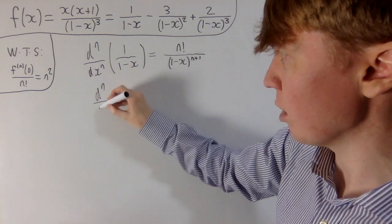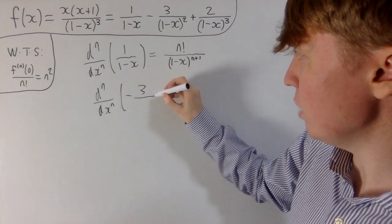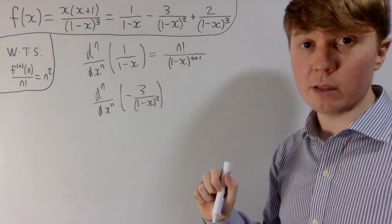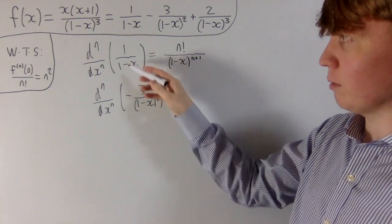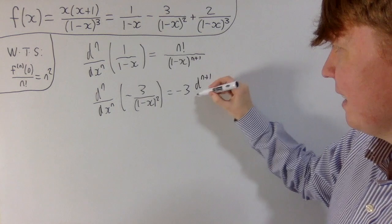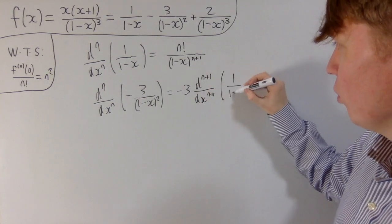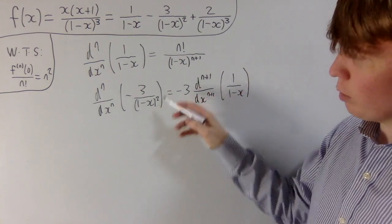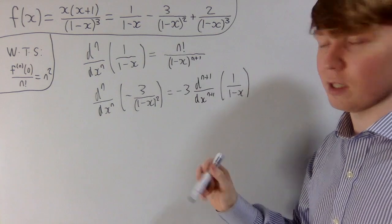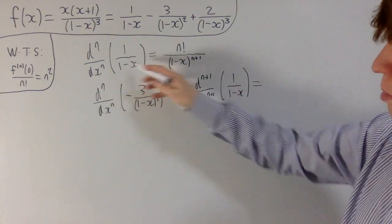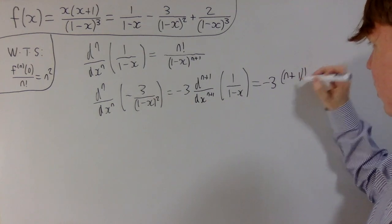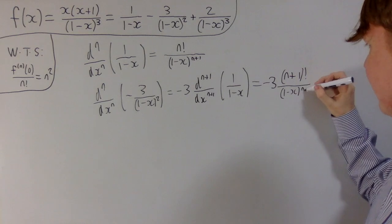Let's differentiate the second term n times. We can take out the minus 3 as a factor. What's particularly nice is that 1/(1-x)² is basically just the first derivative of 1/(1-x), so it's related to our first term. Taking out the factor of minus 3, this is actually the (n+1)th derivative of 1/(1-x). So differentiating 1/(1-x)² n times is the same as starting at 1/(1-x) and differentiating n+1 times. Using our formula with n increased by 1, you get minus 3·(n+1)!/(1-x)^(n+2).